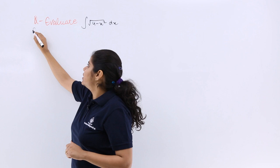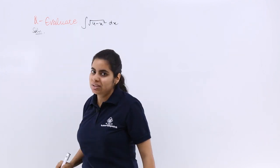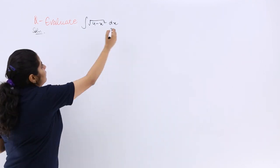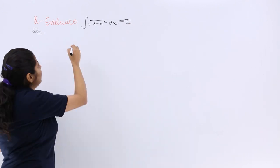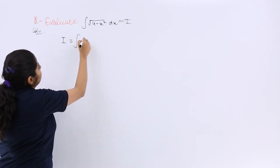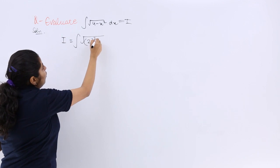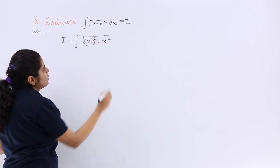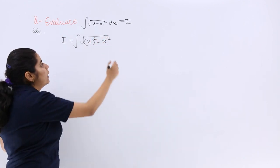First let me write solution and let's go about with the solution. I have my given question as I, and I is equal to under root 4, means 2 square minus x square. Now what formula do I need to use?